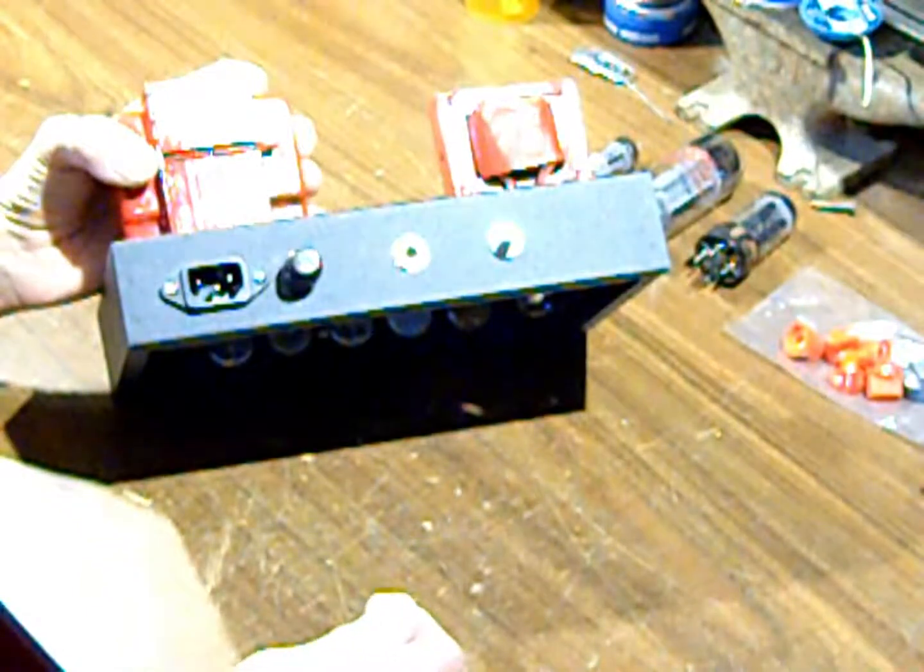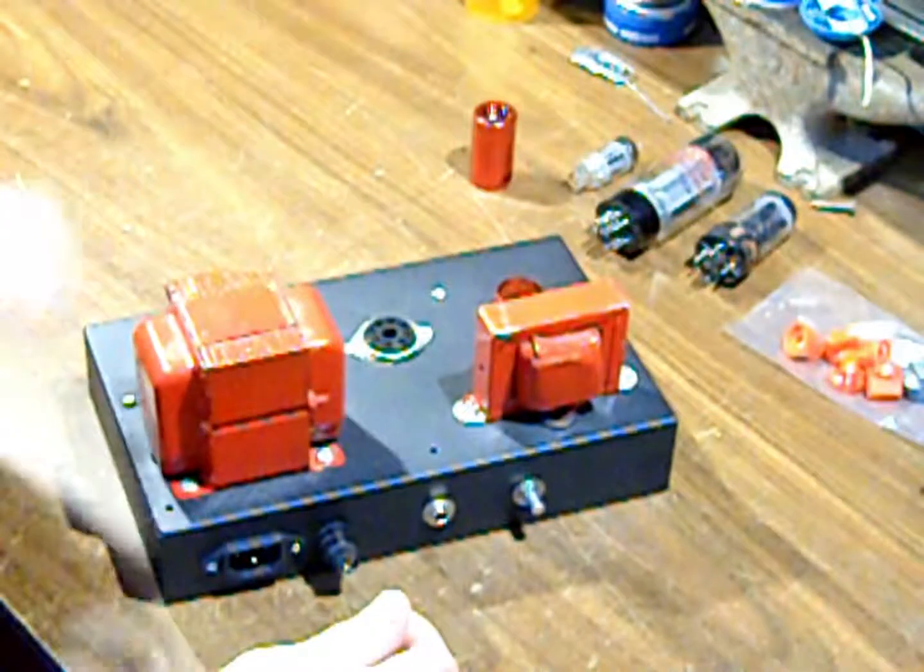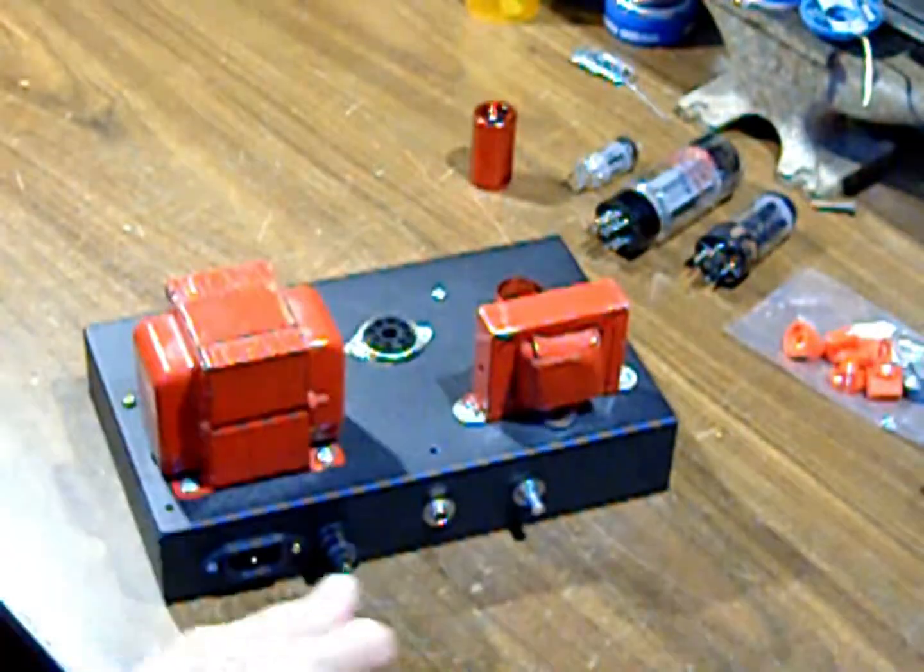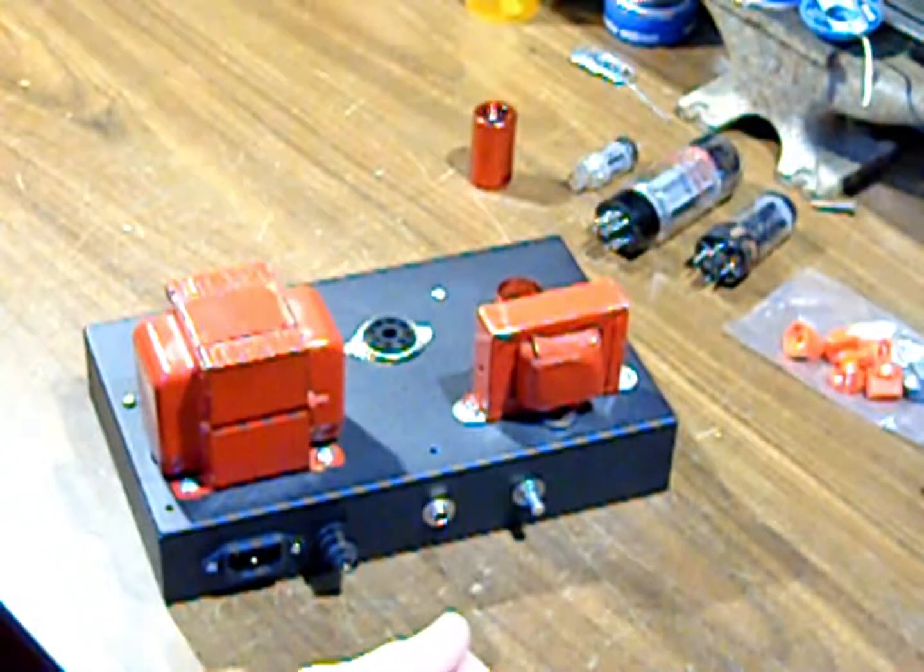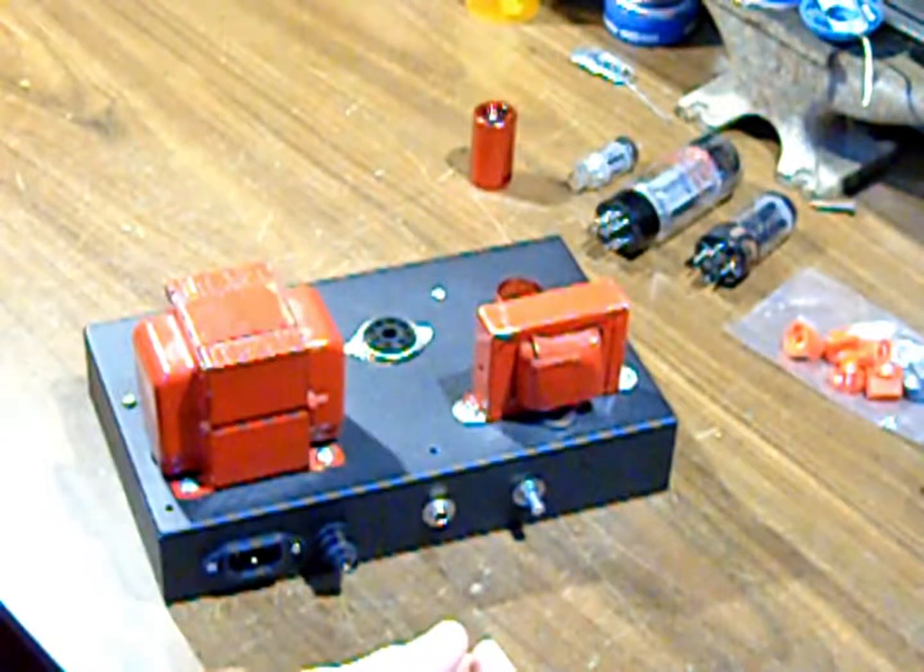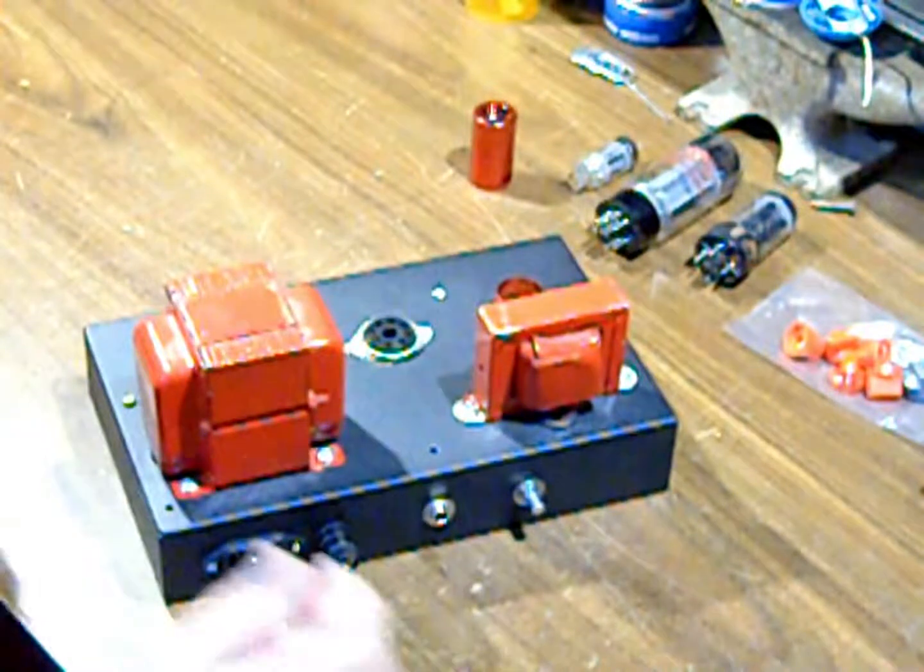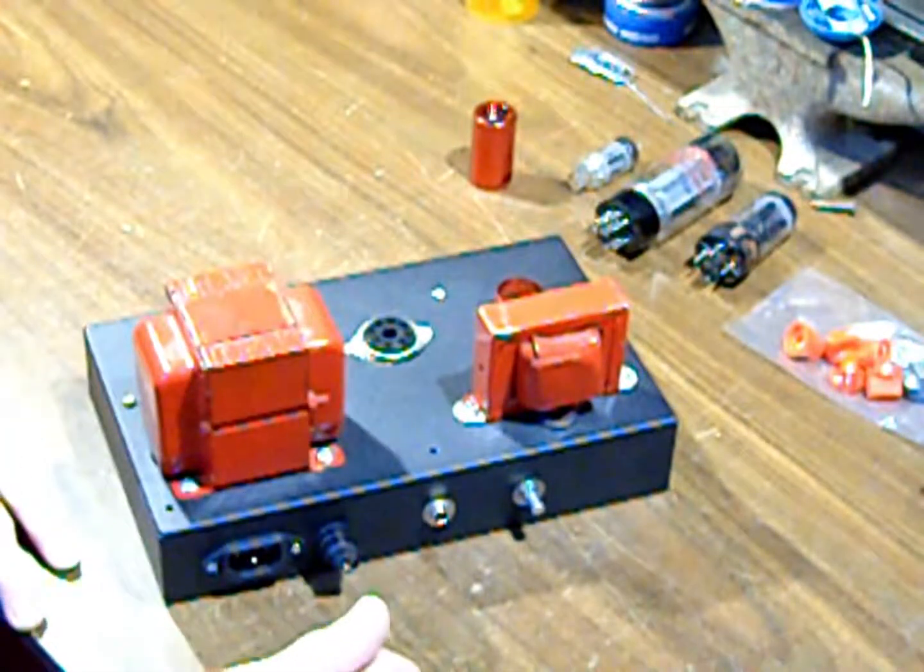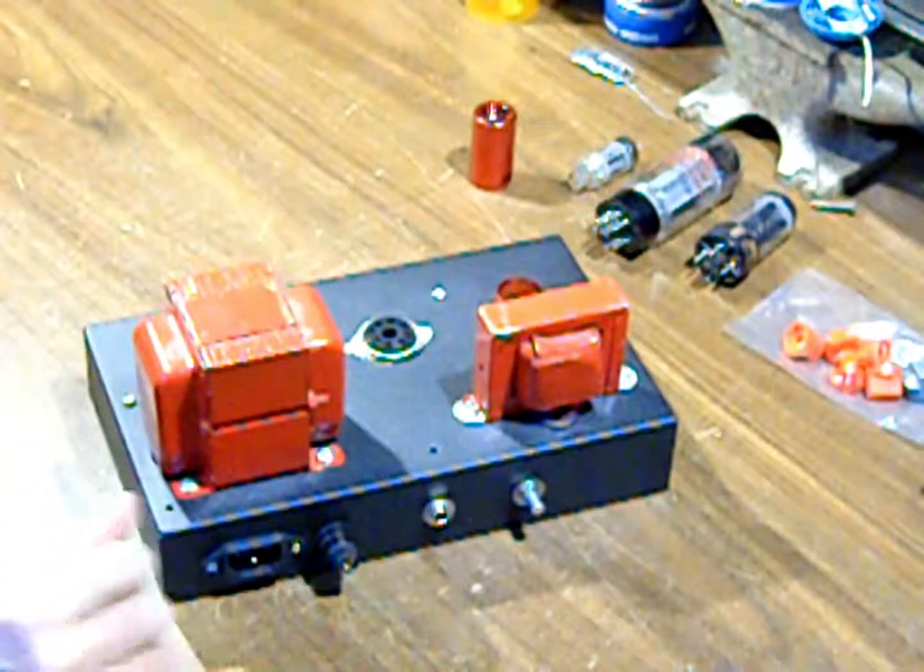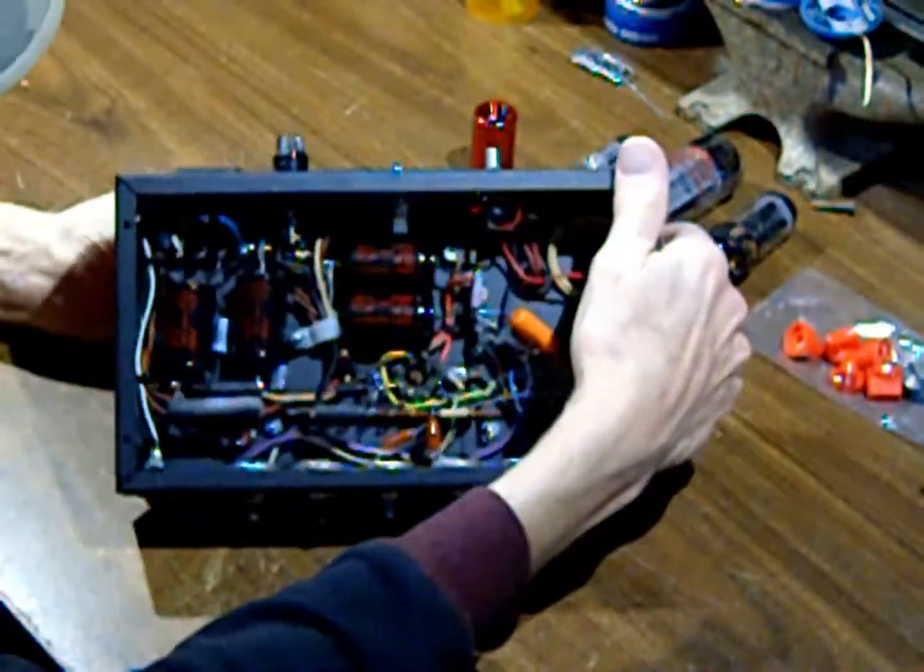The negative feedback loop, which goes from the output of the power transformer back into the preamp to control, for lack of a better way to put it, how clean the sound is. Because it doesn't distort as easily as you turn it up. And if you shut that off, then it distorts easier and gets more buzzy. So that's the way that is. And of course, here's the gut.